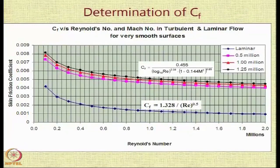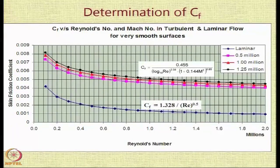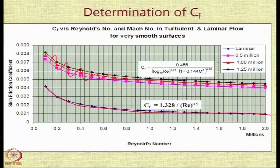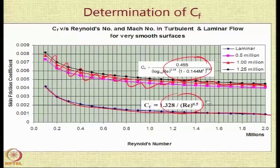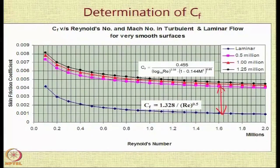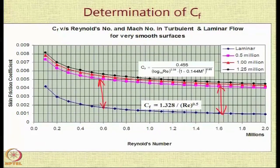This graph shows the variation of the CF skin friction coefficient as a function of Reynolds number: laminar flow is shown in the blue line, and three lines are shown for turbulent flow because the formulae differ slightly for the two cases. The gap between the skin friction coefficient for fully laminar flow and turbulent flow is quite large — typically nearly one-third.